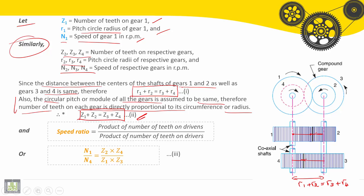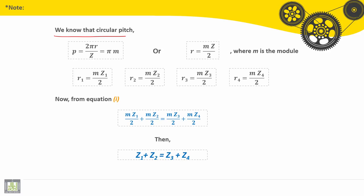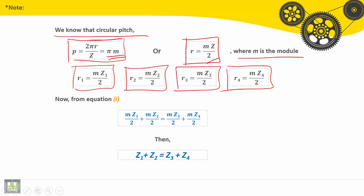Let's see for the second equation how it is found. We know that the circular pitch P is equal to πD/Z, it equals πM. Then R will be equal to MZ/2, where M is the module. For each gear we can find R₁ is MZ₁/2, R₂ and similarly R₃ and R₄.